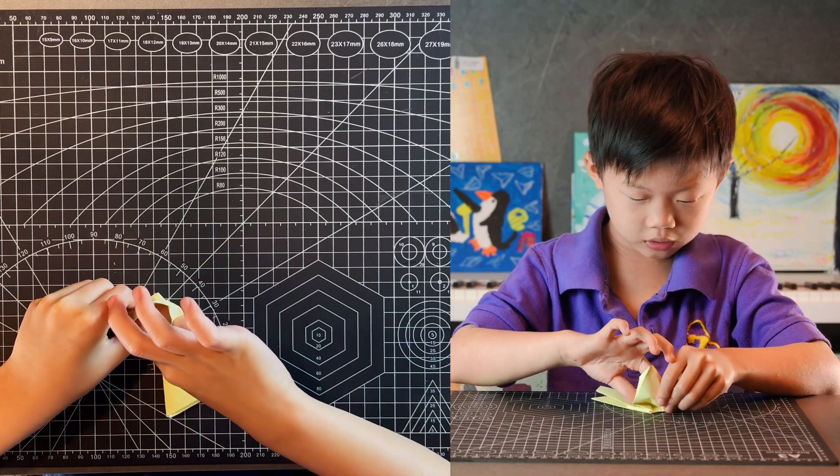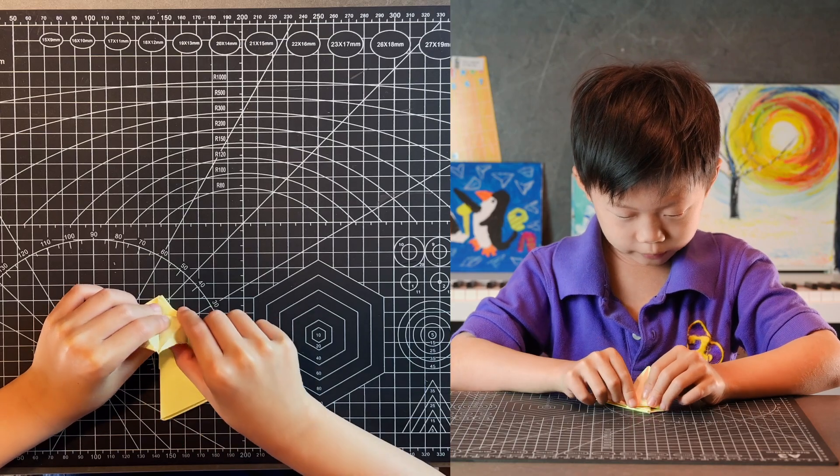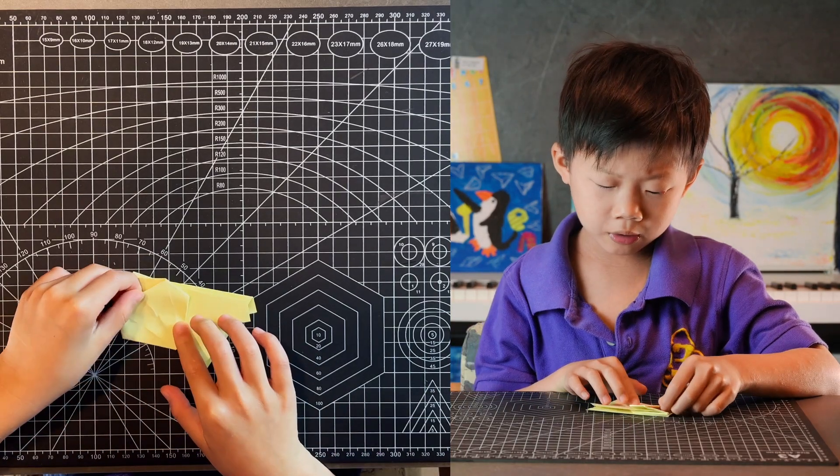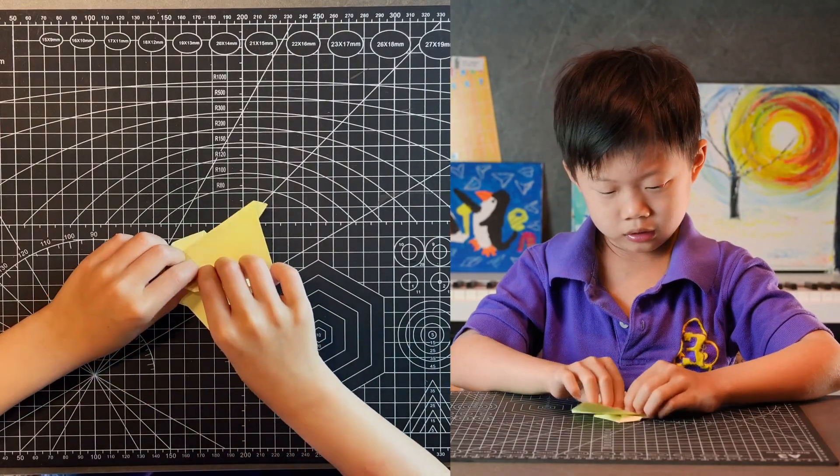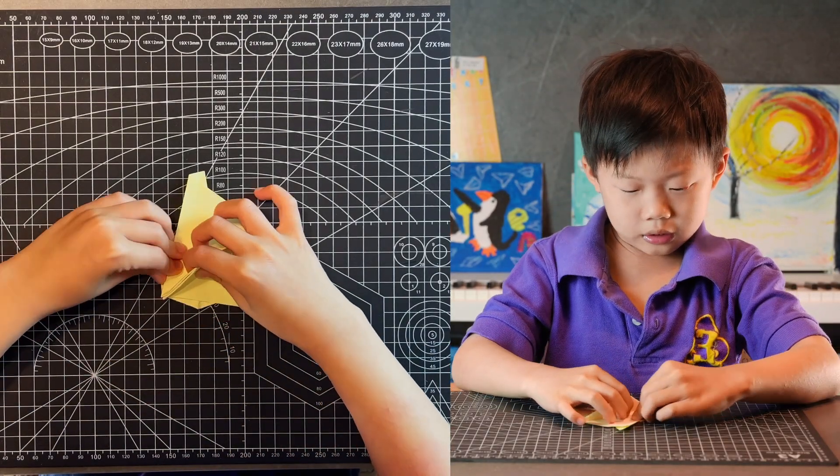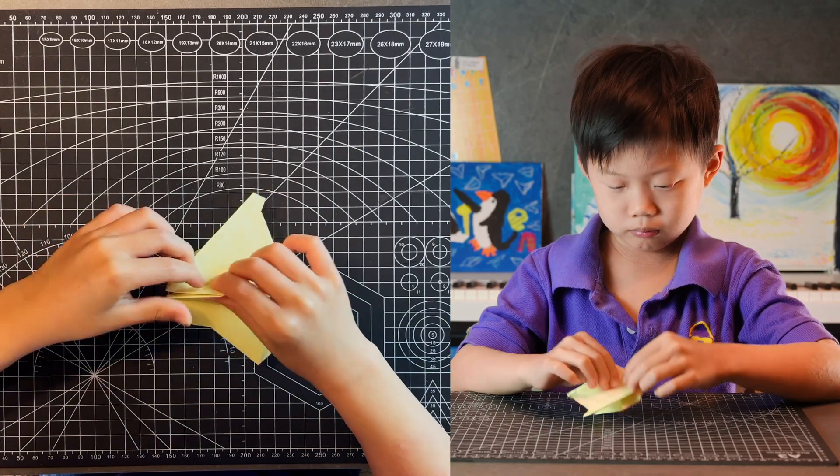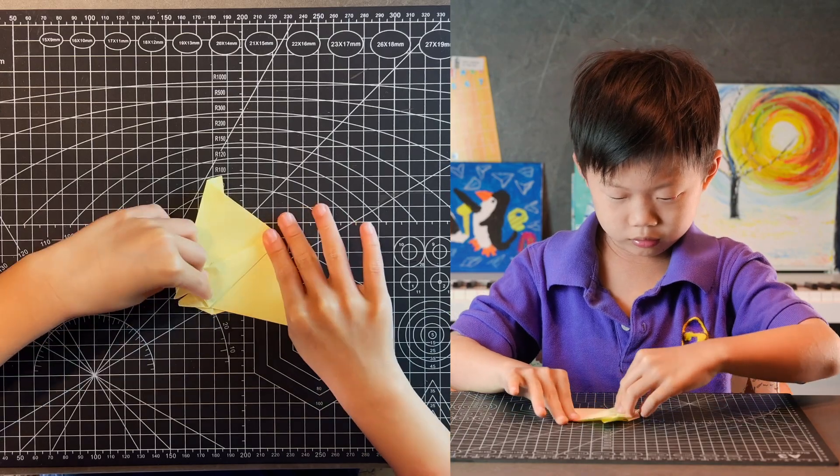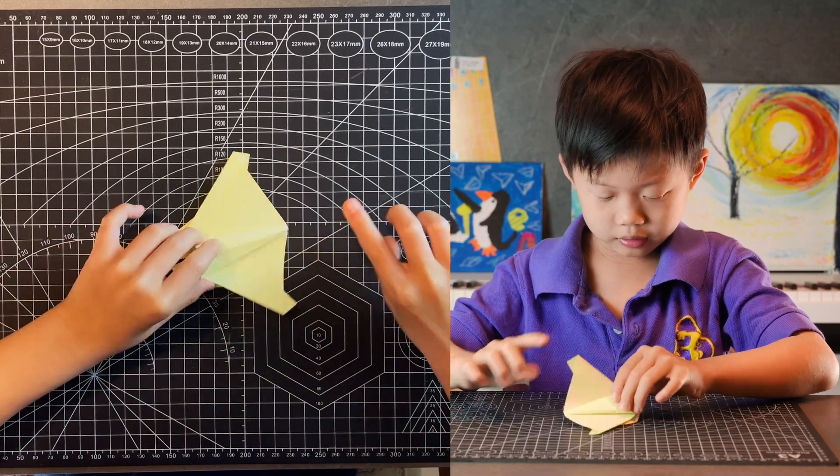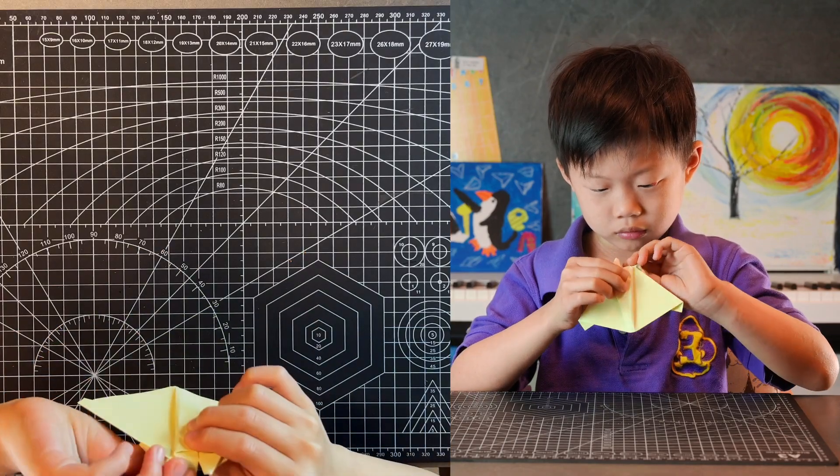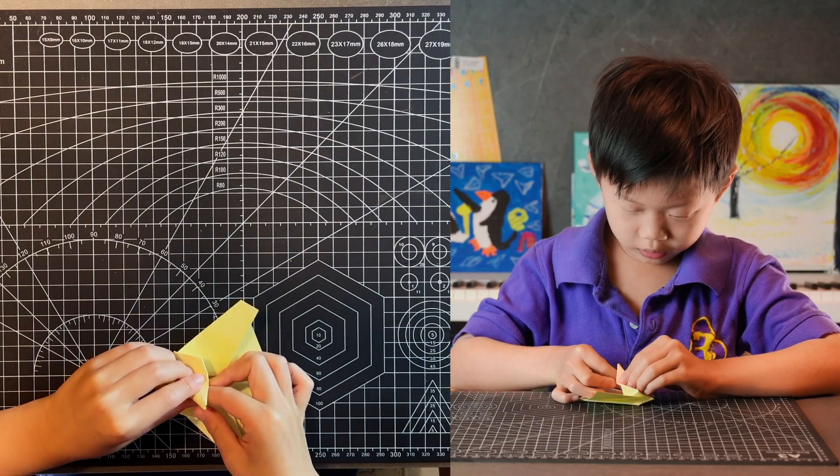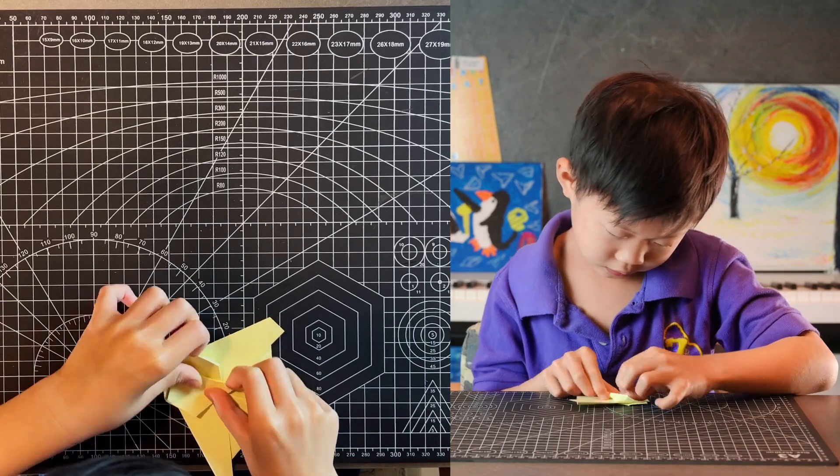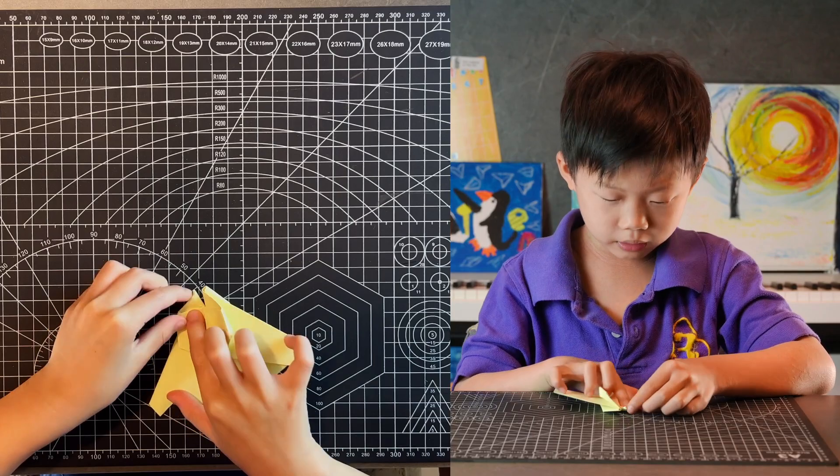And then you can just kind of open the flap and squash it into it. You want the square to line up like that and then gather this so the edges are parallel.